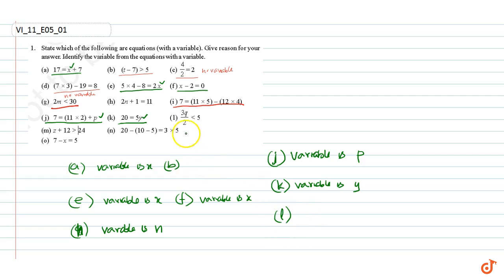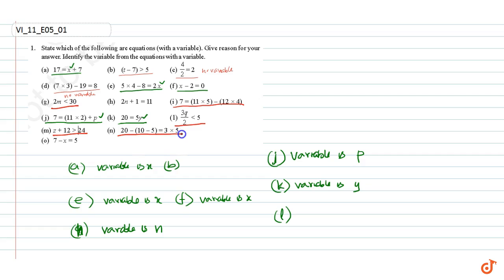Part l: this is an inequality with a variable. Part m: this is another inequality. Part n: this is a numerical equation. Part o: this is an equation with a variable x.